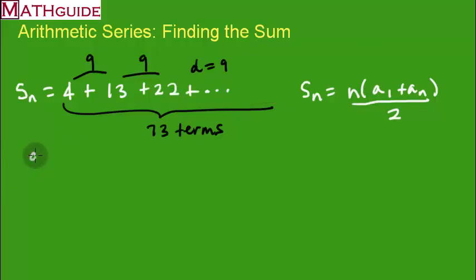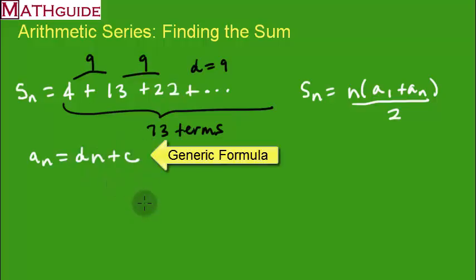So let's go back to our generic term. The generic term is always going to be the common difference times n plus some constant. So if we know what this constant is, we would know the formula. We could use the formula to get the last number. Well, let's go and take a look and plug in what we know. We know the d value is 9.